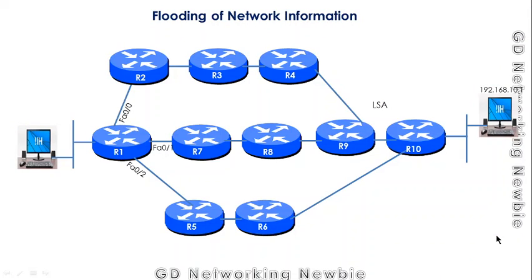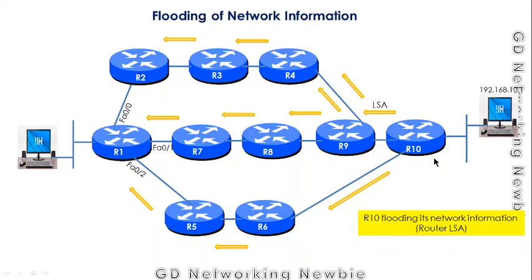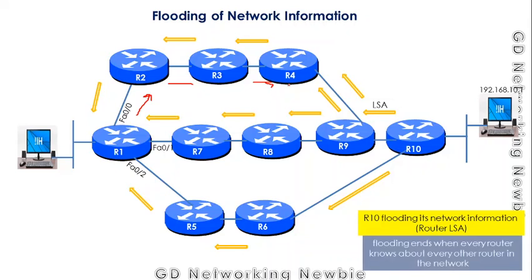To exchange this information, all routers go through a process known as flooding, where they flood the network information. For example, router R10 forwards its LSA to its neighbor router, and that neighbor forwards it to its own neighbors. This process continues until the information has been sent to all available routers in the network. All routers — R1, R3, and others — must do the same thing, exchanging information with every other router.